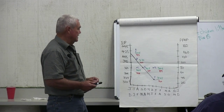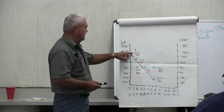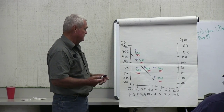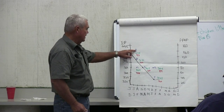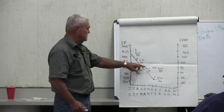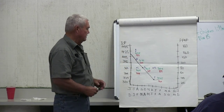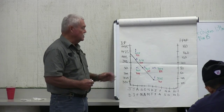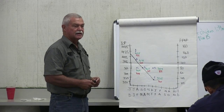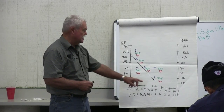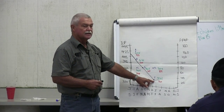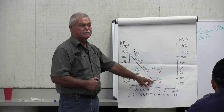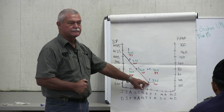I gave you inter-calving periods of six cows — A, B, C, D, E, F — and asked which was the most fertile cow, which had the shortest inter-calving period. This cow here had the shortest inter-calving period, but she's not the most fertile.